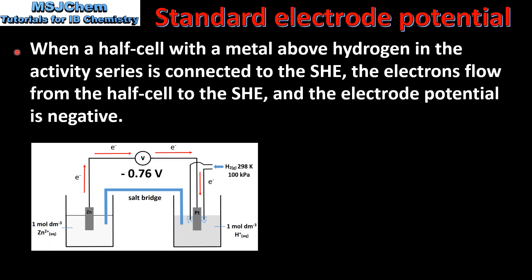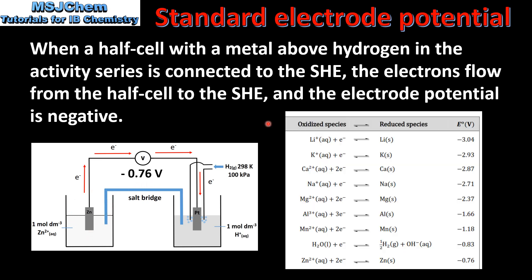So let's have a summary. When a half cell with a metal above hydrogen in the activity series is connected to the standard hydrogen electrode, the electrons flow from the half cell to the standard hydrogen electrode and the electrode potential is negative. The example we looked at is the zinc half cell connected to the standard hydrogen electrode, and that gave us a voltage of negative 0.76 volts, which is the standard electrode potential of the zinc half cell. The standard electrode potential values can be found in the data booklet. All these metals are above hydrogen in the activity series, therefore they have a negative value for the standard electrode potential.